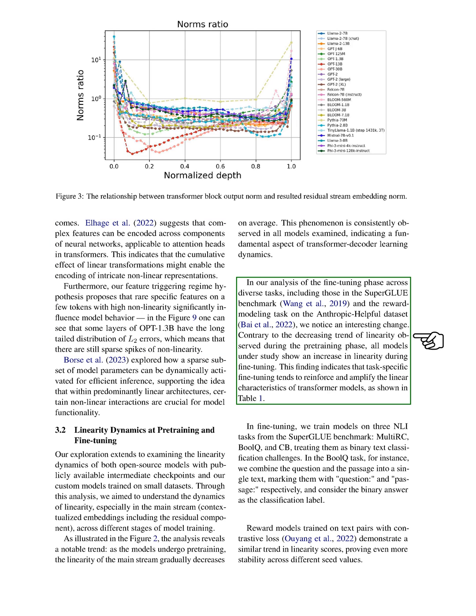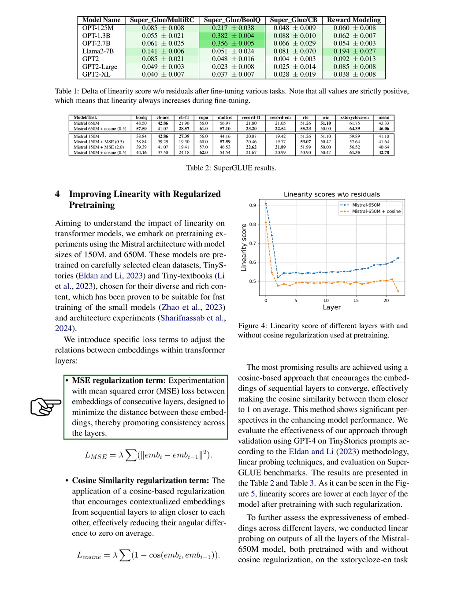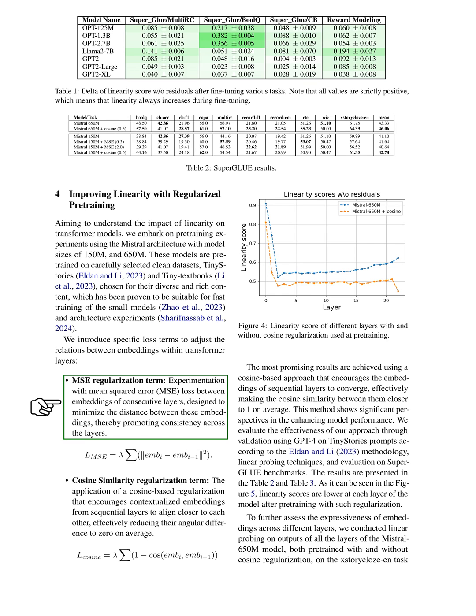During fine-tuning, models showed an increase in linearity, reinforcing the linear characteristics for specific tasks. To improve linearity, we conducted pre-training experiments with regularization terms to encourage consistency and alignment between embeddings of consecutive layers. The results showed enhanced model performance, with embeddings from pre-trained models exhibiting better performance in subsequent tasks, suggesting that promoting alignment between embeddings can lead to improved model expressiveness and performance.